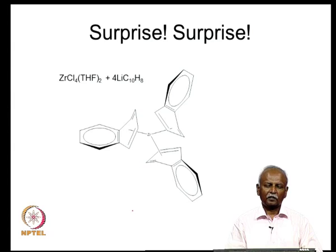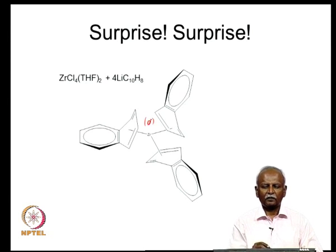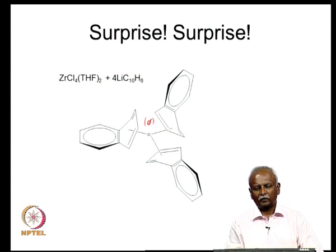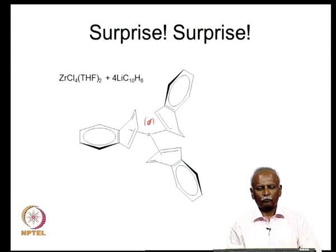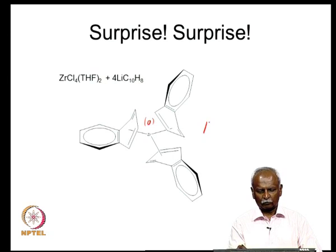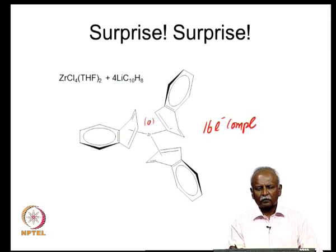In this trimeric complex, zirconium is in the 0 oxidation state and has 4 pi electrons times 3, so a total of 12 electrons donated to the zirconium. Zirconium itself had 4 electrons, so this is a 16-electron complex.